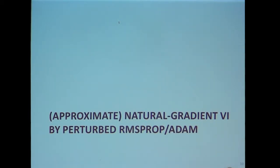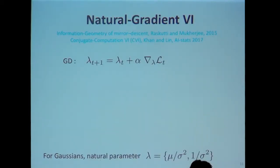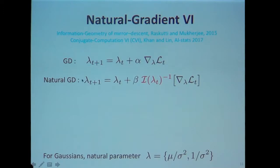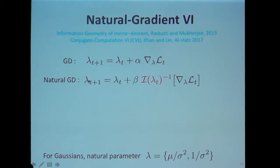First let me introduce natural gradient variational inference. Let lambda be the parameter of the distribution, chosen for convenience to be the natural parameter. In gradient descent, you take the gradient of the variational objective and take a step. In natural gradient descent, you scale this gradient by the Fisher information matrix — in this case, the Fisher information matrix of the Gaussian distribution Q(theta) you're approximating. This has the nice property of adapting the step size, but the update is difficult to implement and usually has no closed form.